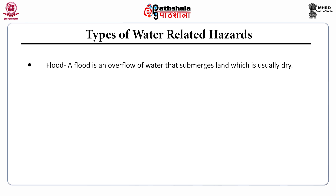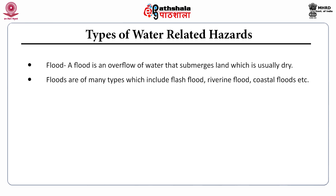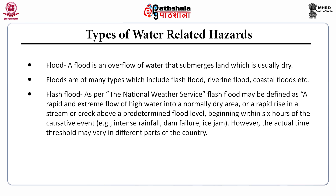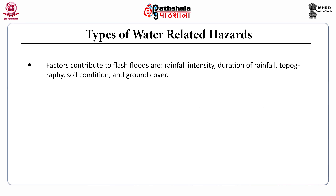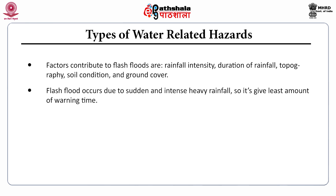First of all, flood. A flood is an overflow of water that submerges land which is usually dry. Floods are of many types, which includes flash flood, riverine flood, coastal floods, etc. What is a flash flood? As per the National Weather Service, a flash flood may be determined as a rapid and extreme flow of high water into a normally dry area, or a rapid rise in the stream or creek above a pre-determined flood level beginning within six hours of the causative event. However, the actual time threshold may vary in different parts of the country. Factors that contribute to flash floods include rainfall.